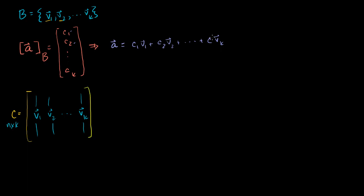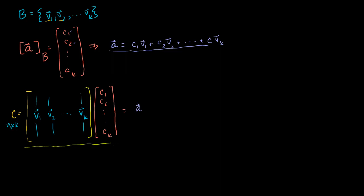Another way to write this expression is to say that a is equal to the matrix C times the vector (c1, c2, all the way to ck). This matrix-vector product gives c1 times v1 plus c2 times v2 plus c3 times v3, all the way to ck times vk, which equals a. These two expressions are completely identical. I'm just applying new words to things we've seen many times.